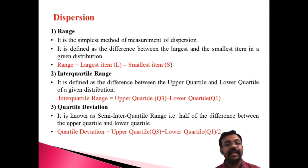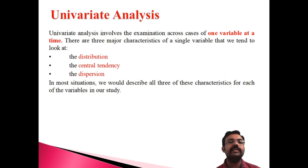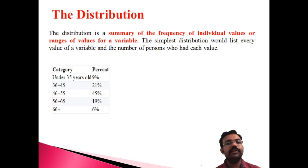In conclusion, this lecture covered descriptive statistics — including mean, median, and mode as part of the distribution. Descriptive statistics can be classified as three types: univariate, bivariate, and multivariate analysis. Univariate analysis is analysis based on a single variable at a time, focusing on distribution-wise, central tendency-wise, and dispersion point of view.